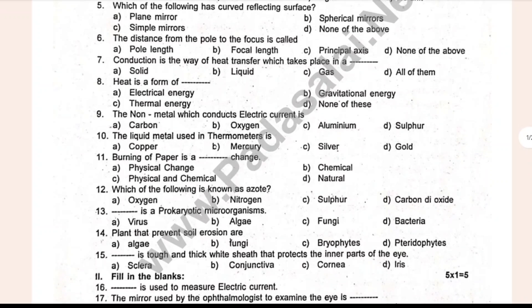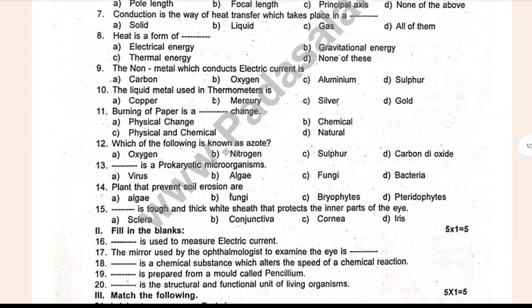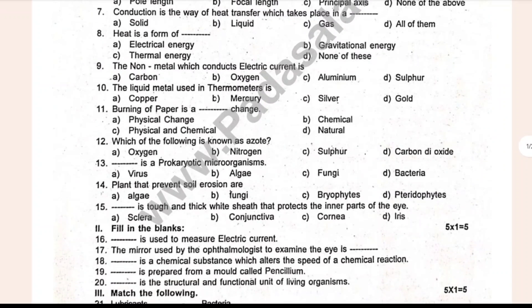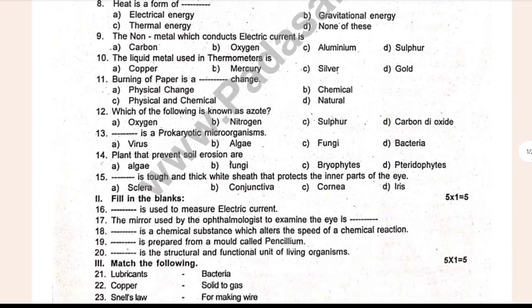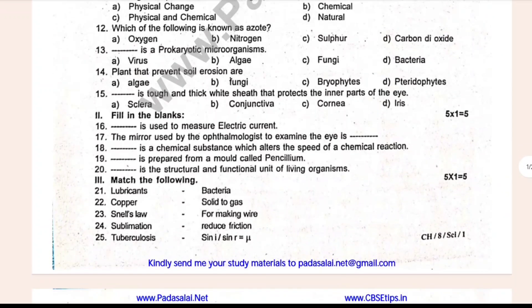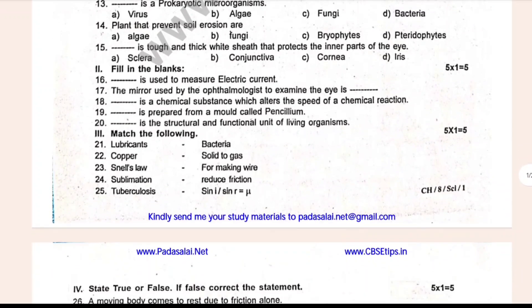The liquid metal used in a thermometer is dash. Burning of vapor is a dash change. Which of the following is known as azote? Dash is the prokaryotic microorganism. The plant that prevents soil erosion is dash. Dash is the tough and thick white layer that protects the inner part of the eyes. You can choose the fill-in-the-blanks.